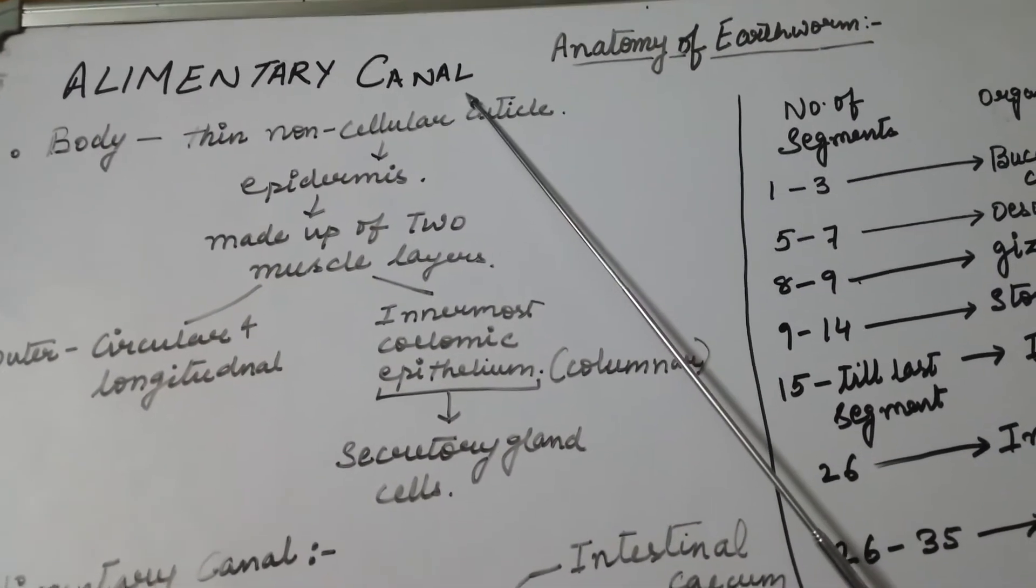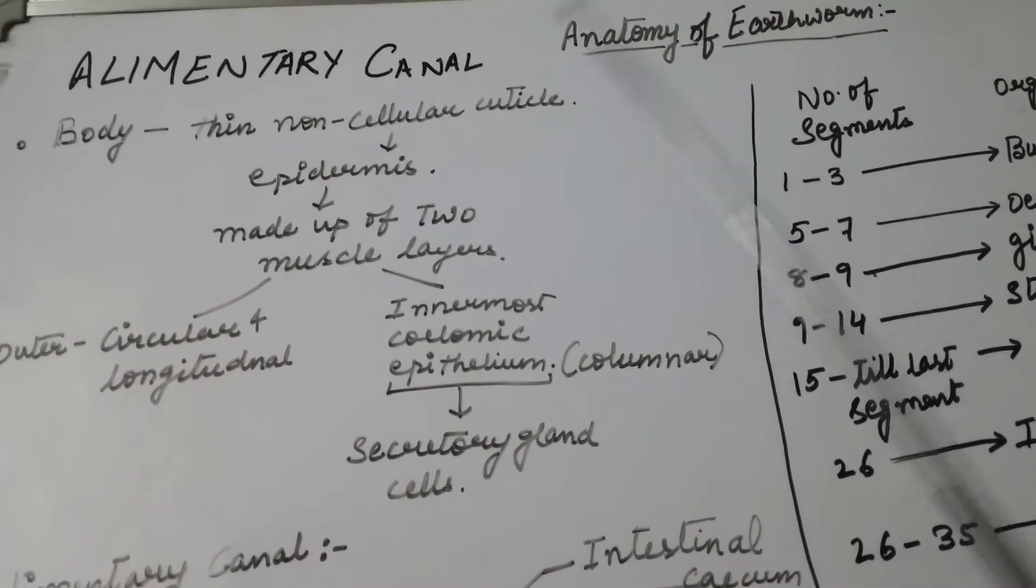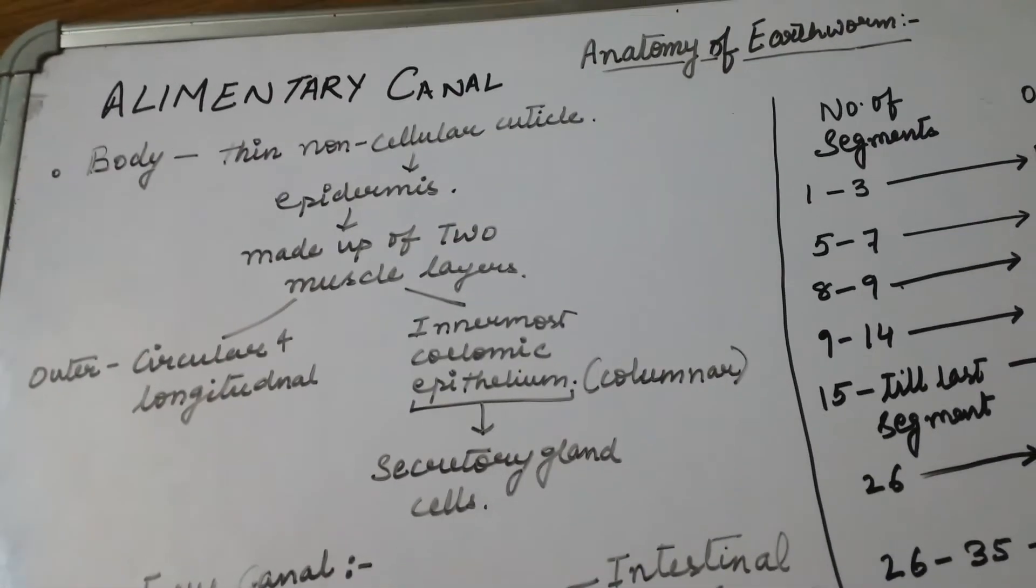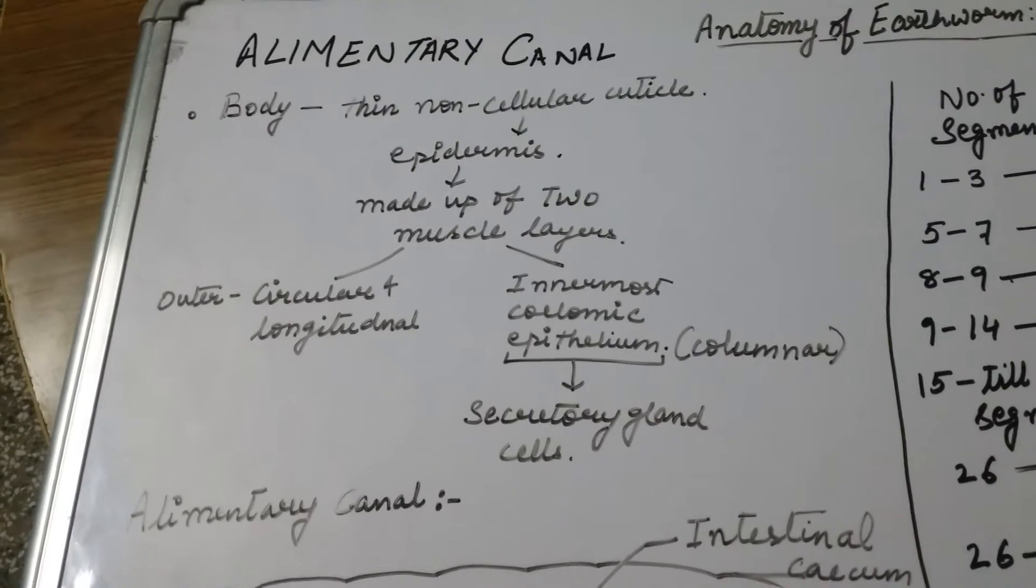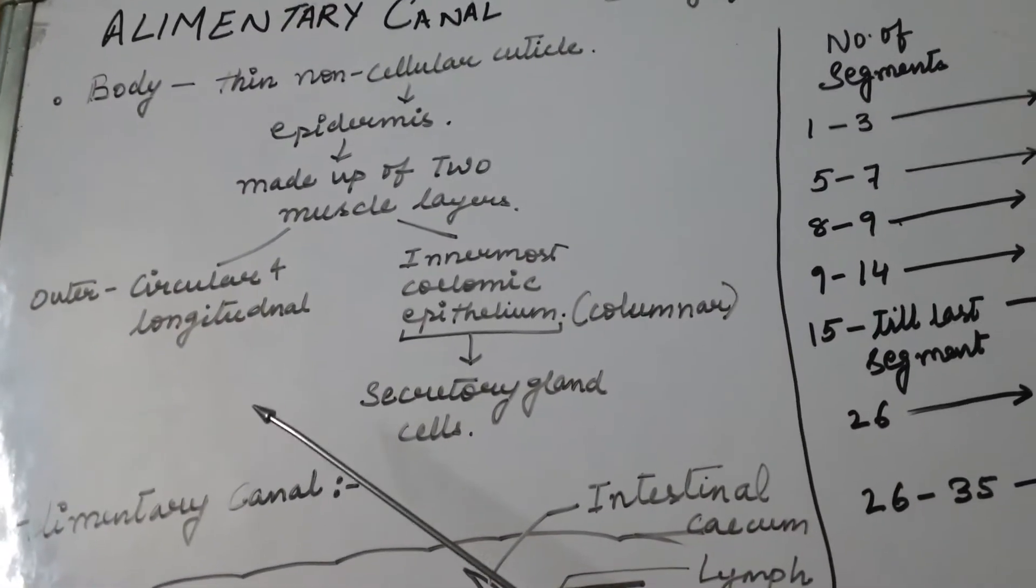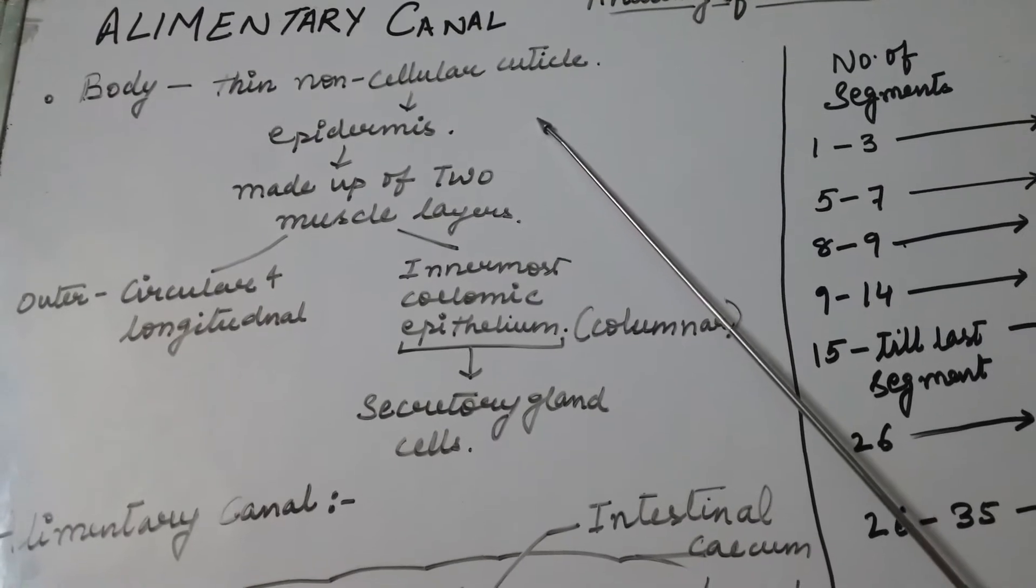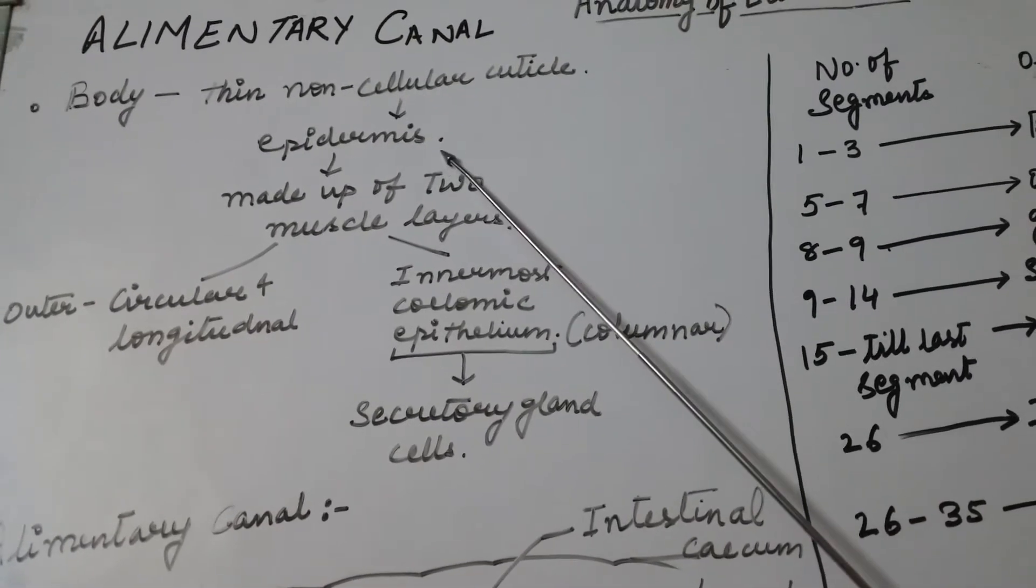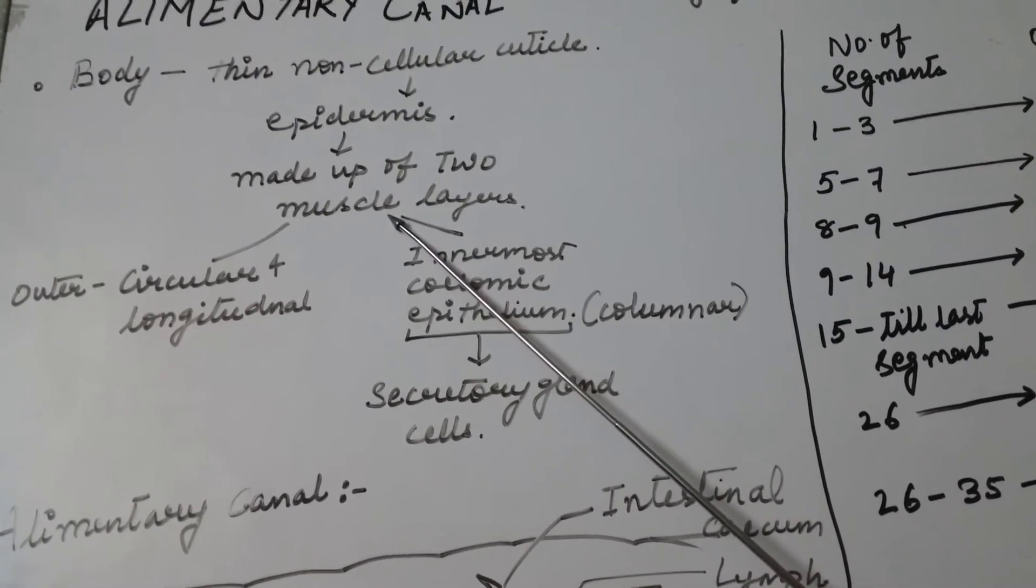Let us start with the alimentary canal of the earthworm. The body of the earthworm is covered externally via thin non-cellular cuticle called the epidermis. This epidermis is made up of two muscular layers.